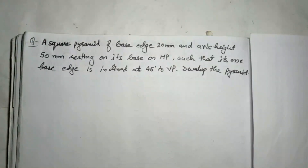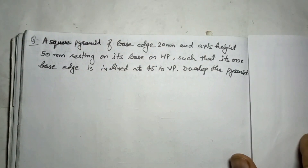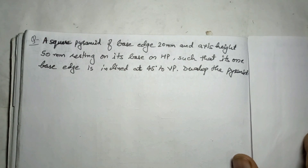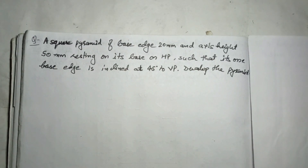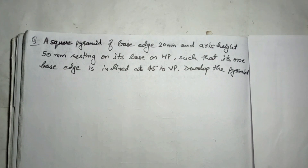Hello everyone. Now we will solve a few questions based on the radial line method. In development of surfaces, there are two methods: radial line and parallel line. Parallel line is used for the development of a square prism, cube, or cylinder. But when the object is a pyramid or cone, we apply the radial line method. So in this question, I will teach you how to apply the radial line method.